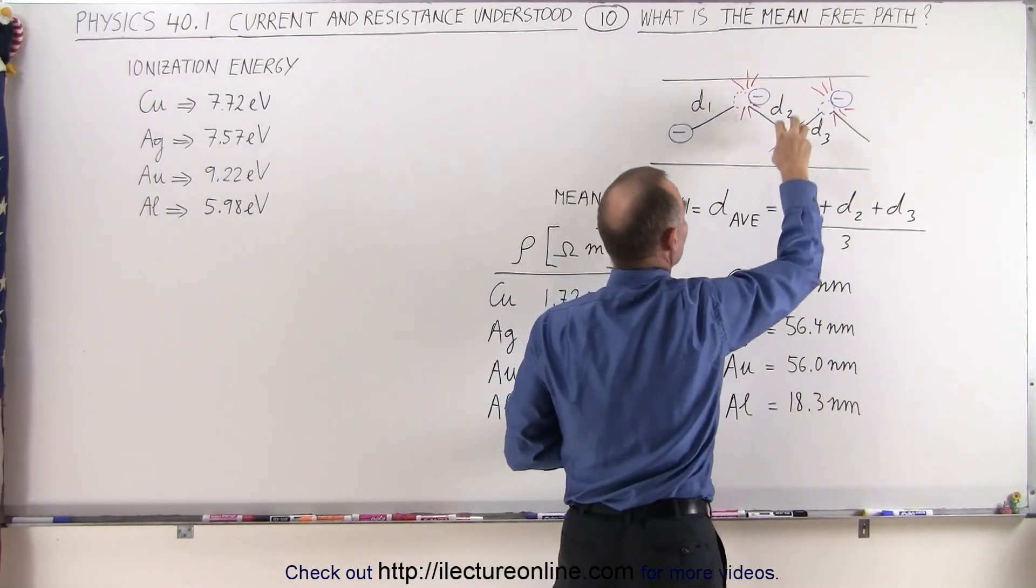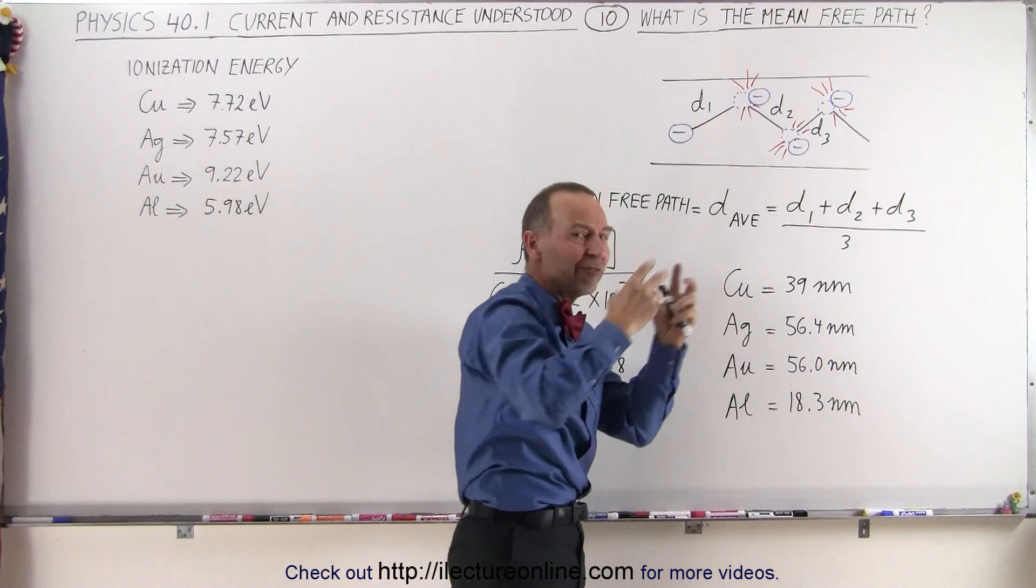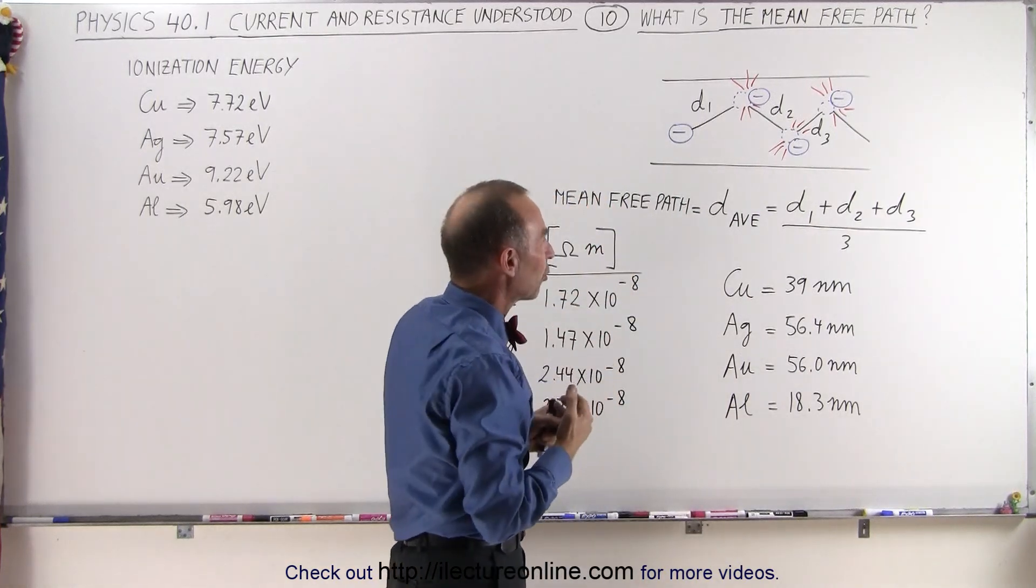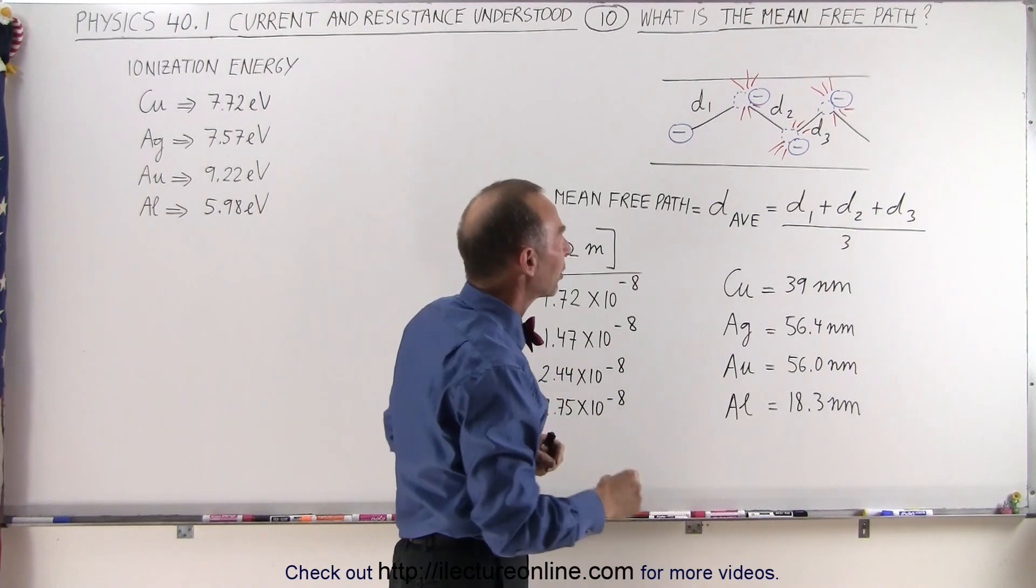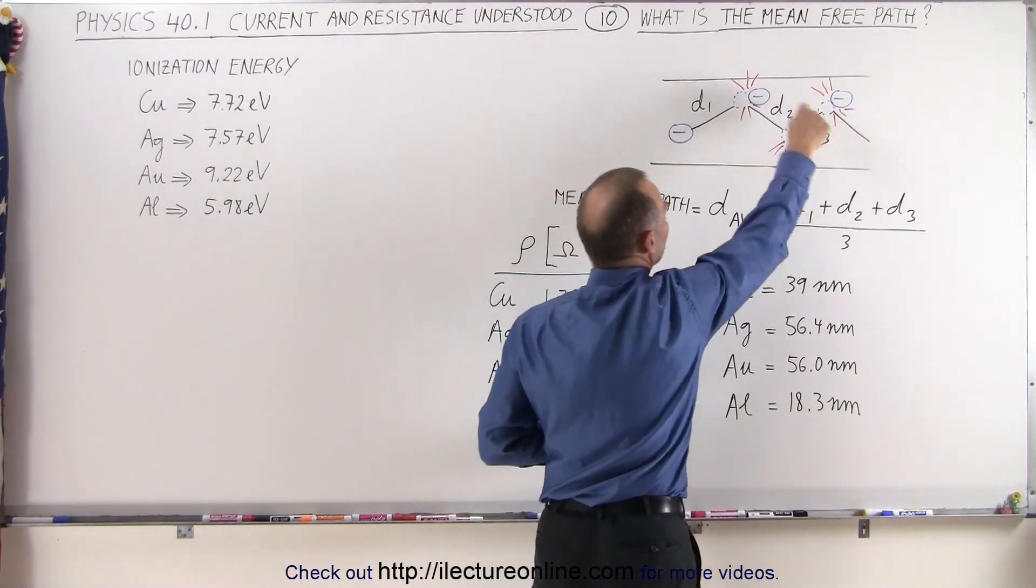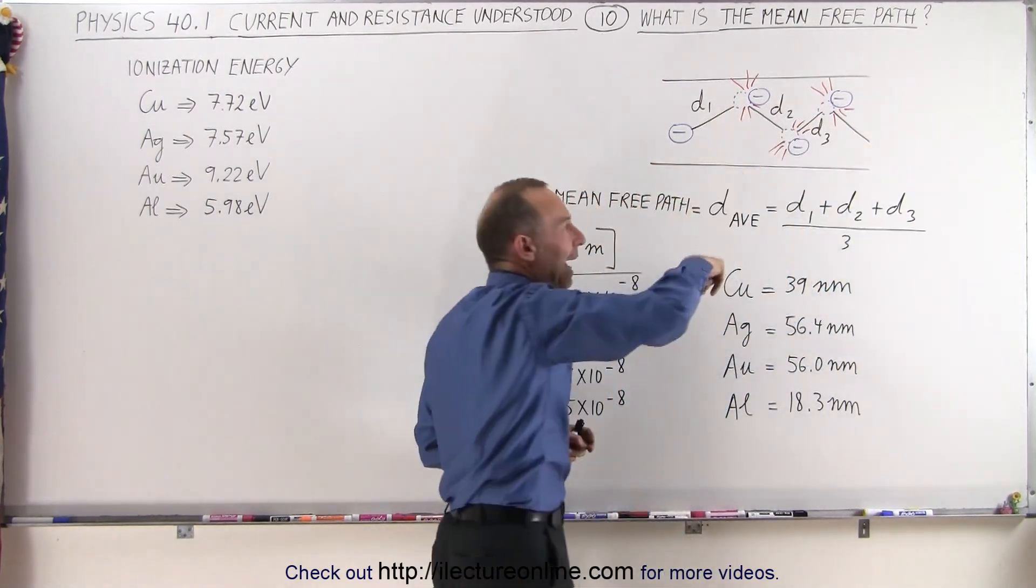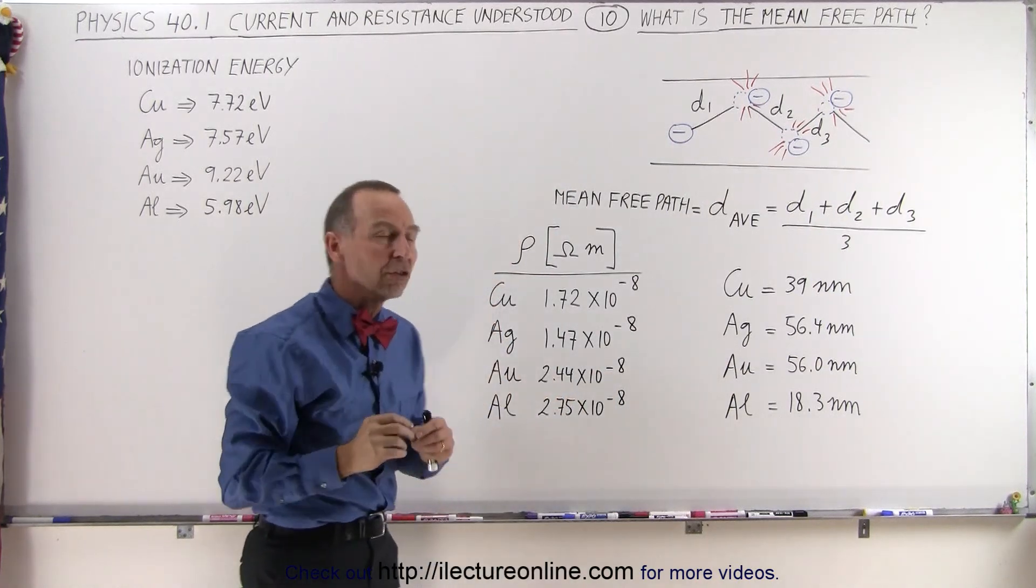So here's an atom, there's an atom, there's an atom, and of course they're constantly vibrating because of the thermal agitation or the thermal energy of the atoms in the conductor. And so the electron is going to be bumping around from atom to atom, making those collisions.